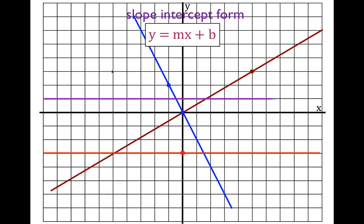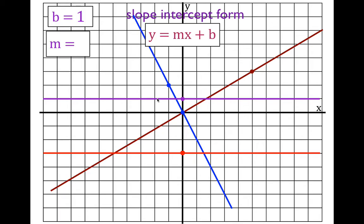Last one — another nice horizontal line. Write down b and m. It crosses the y-axis at plus one, so b equals one. Horizontal lines have a slope of zero, so m equals zero. When we write the equation, we don't write zero x or plus zero. The equation of this line is simply y equals one.